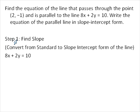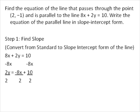The first step is to find the slope. The quickest way to do that is to convert from standard to slope-intercept form — we're going to essentially isolate the y value. To do that we subtract 8x from both sides of the equation and then divide by the coefficient of y. So we subtract 8x from both sides, divide every term by the coefficient of y: 2y divided by 2 is y, negative 8 divided by 2 is negative 4x, and 10 divided by 2 is 5.